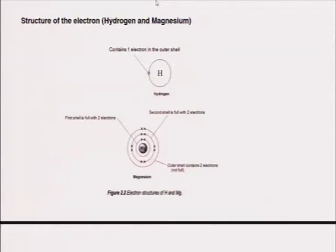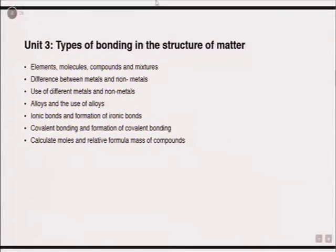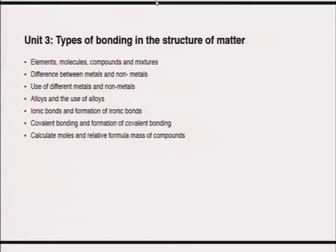Atoms react with each other so they can either give or gain electrons depending on where they are situated in the periodic table. When you look at Unit 3 of the study guide, it starts talking about the different types of bonding. This is one of the critical units for your exam preparation. You need to understand what elements are and how they are different from molecules, compounds and mixtures.